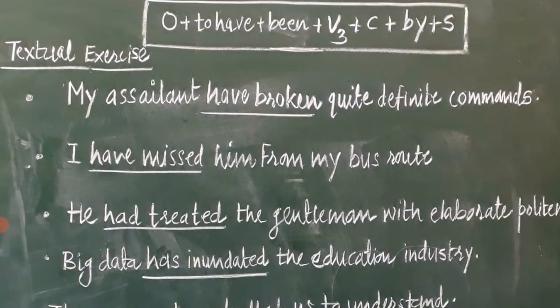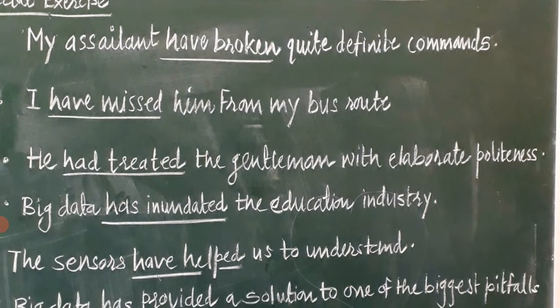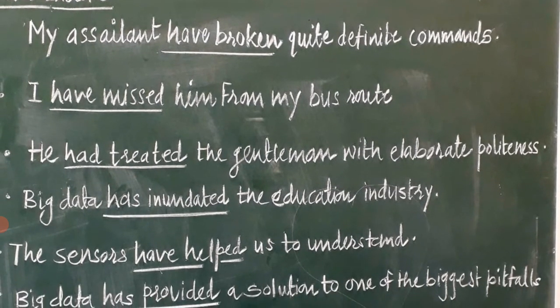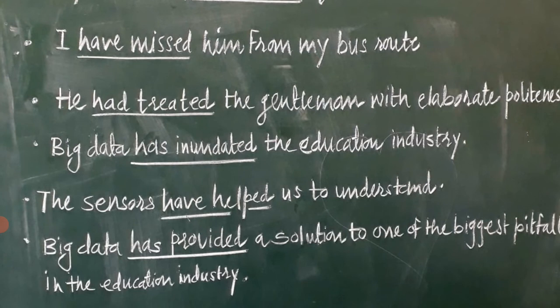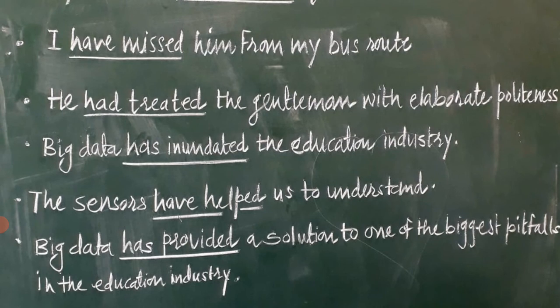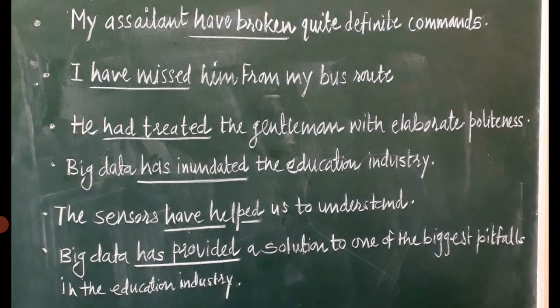Here are some examples taken from your 12th standard text: 'My assistant have broken quite definite commands.' — I have underlined the part which highlights the passive construction. Another example: 'I have missed him from my bus route.' Next: 'He had treated the gentleman with elaborate politeness.' Next: 'Big data has inundated the education industry.' Next: 'The sensors have helped us to understand.' And: 'Big data has provided a solution to one of the biggest pitfalls in the education industry.' These sentences are for your practice in converting perfect tense sentences into passive construction.